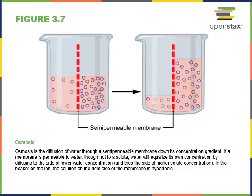Osmosis is the diffusion of water through a semipermeable membrane down its concentration gradient. For example, if there is a high concentration of solute on one side of a semipermeable membrane and a low concentration on the other, water will move from the side with low solute concentration to the side with high solute concentration, until solute concentration is equalized on both sides.